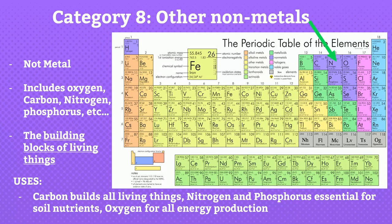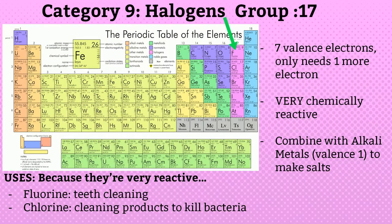Category 8: non-metals, shown in blue color. Including hydrogen, carbon, nitrogen, oxygen, phosphorus, sulfur, and others — they are the building blocks of living things. Without these non-metals we cannot survive: carbon builds all living things, nitrogen and phosphorus are essential for soil nutrients, and oxygen is needed for all energy production. They are P-block elements.